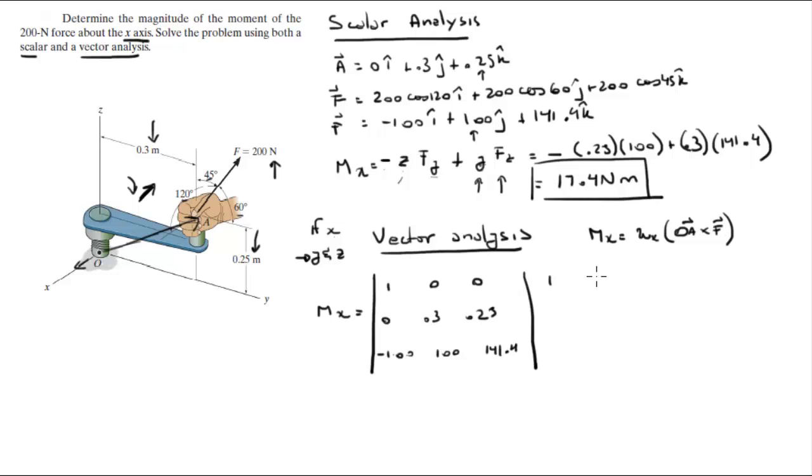Positive diagonals: 1 times 0.3 times 141.4 is 42.4. Then 0 times 100 is 0, 0 times 0 times 100 is 0. And 1 times 100 is 100.